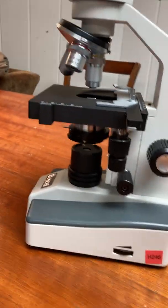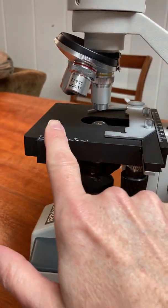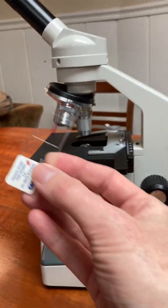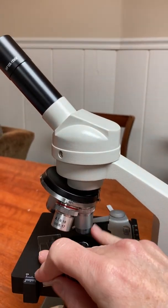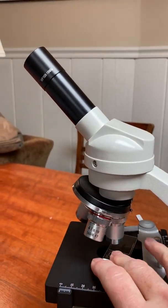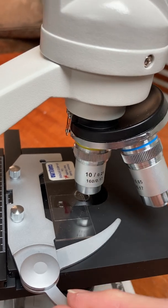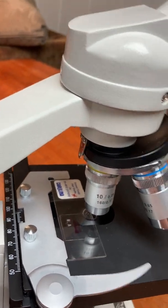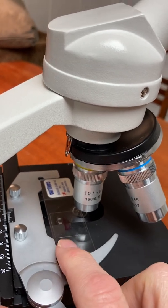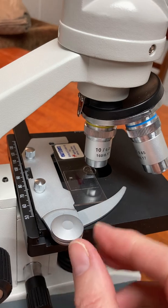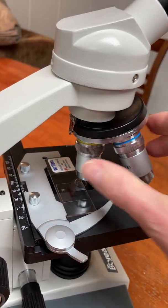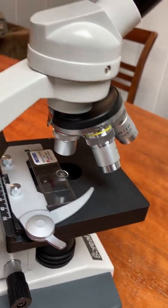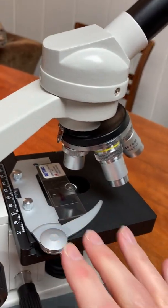The next vocabulary word is the stage which is this platform where you put the microscope slide and here is a microscope slide. So you put it onto the stage in a way where the stage clip here holds the microscope slide in position, in place. See that? That's so that the slide stays put and doesn't slide all over the place on the stage. So stage is the black stage and this is the stage clip.